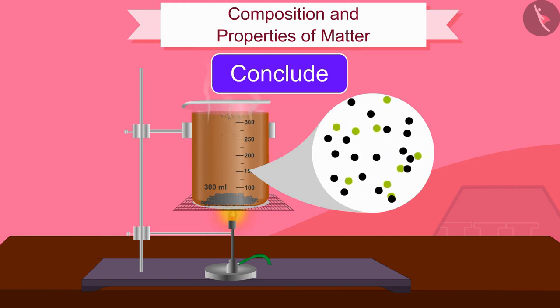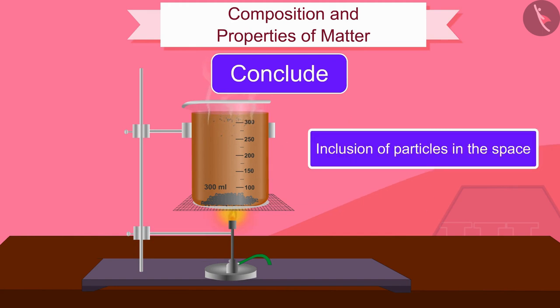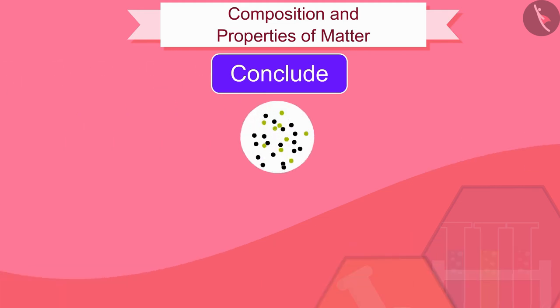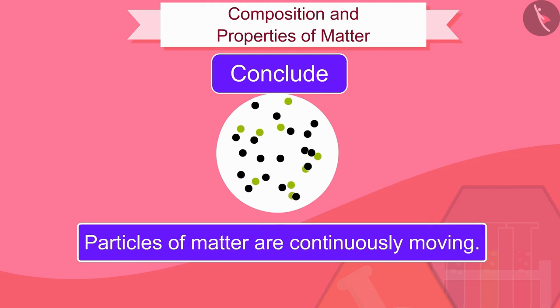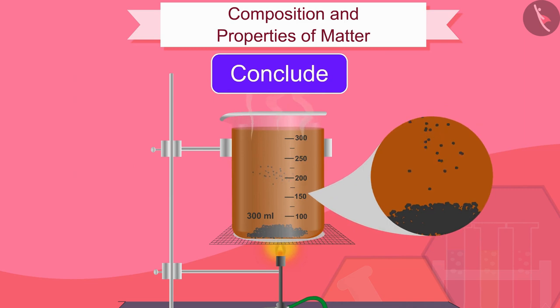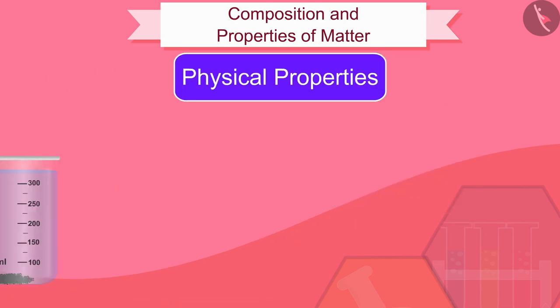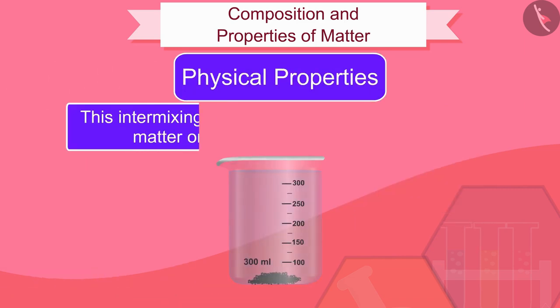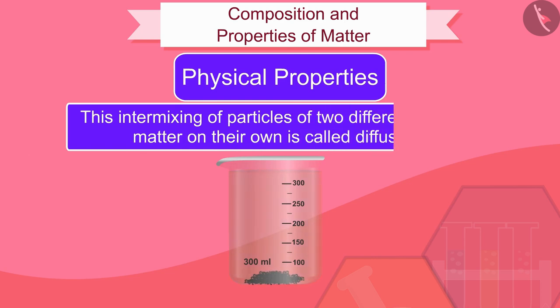This is due to the inclusion of particles in the space. In other words we can say that particles of matter are continuously moving, that is they have kinetic energy and this energy increases as the temperature increases. This intermixing of particles of two different types of matter on their own is called diffusion.